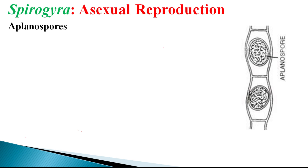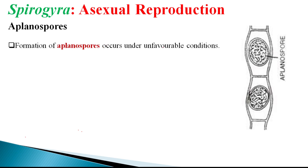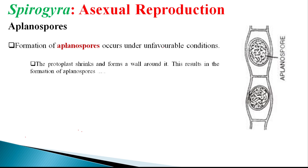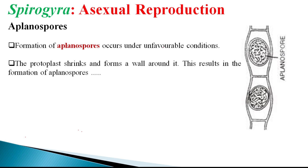Let's look at the first category — planospores — how they are produced and what their characteristic features are. Planospores are always developed under unfavorable conditions. During this mechanism, the protoplast shrinks and forms a thick wall around it, resulting in the formation of a spore-like structure called a planospore.